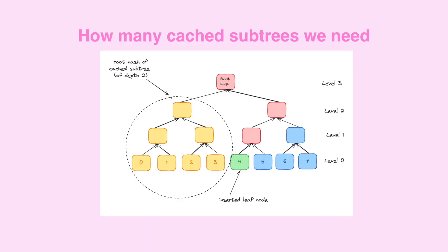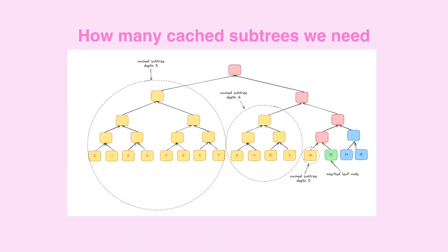Let's take another example with a tree of depth four. If we insert the leaf with index 13 (binary: 1101), we'd need one subtree of depth 3, one subtree of depth 2, zero subtrees of depth 1, and one subtree of depth 0. These subtree roots are all you need to reconstruct the entire tree — you don't need to store anything in between, meaning we only need three Merkle roots rather than storing all intermediate nodes and leaf hashes, which dramatically reduces the amount of data stored on-chain.